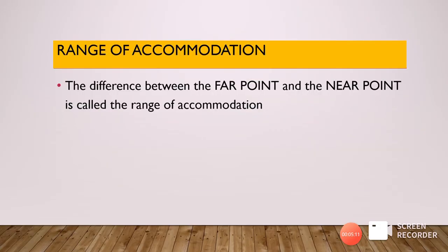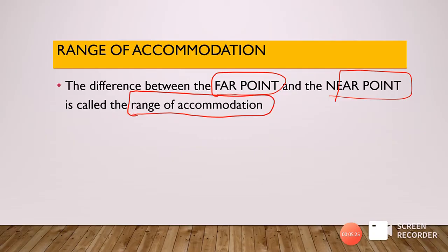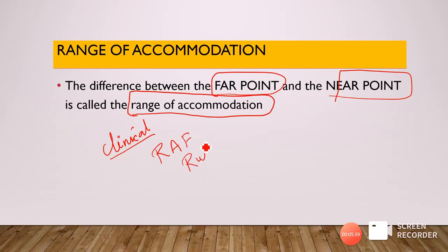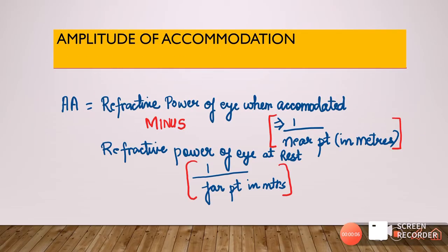The difference between the far point and the near point of the person is called the range of accommodation. An important clinical point: the near point and far point of accommodation are measured using an instrument called the RAF rule — which stands for the Royal Air Force rule. With these two points, you can subtract them and find the range of accommodation.